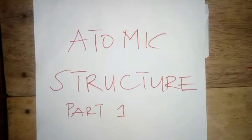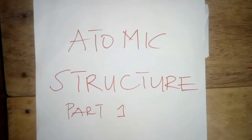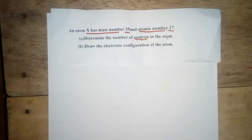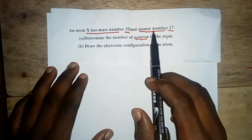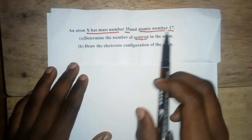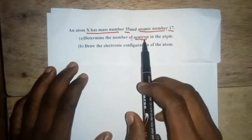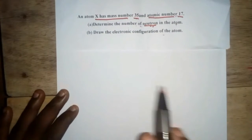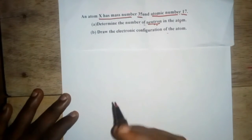Let's look at atomic structure. If this is your first time on this channel, please subscribe and hit the notification bell so you'll be the first to get new videos. We have a question here: an atom has a mass number of 35 and an atomic number of 17. We need to determine the number of neutrons in the atom and draw the electronic configuration.